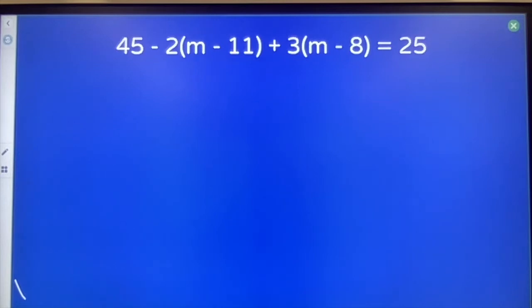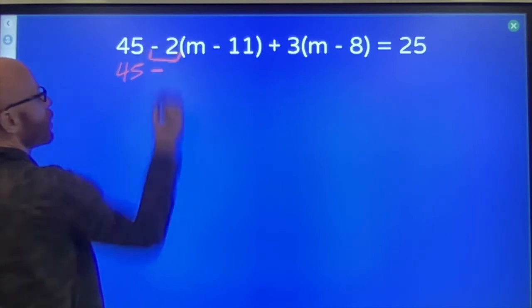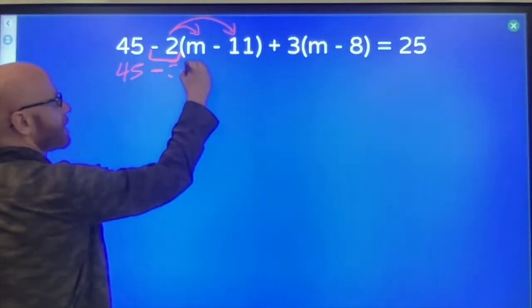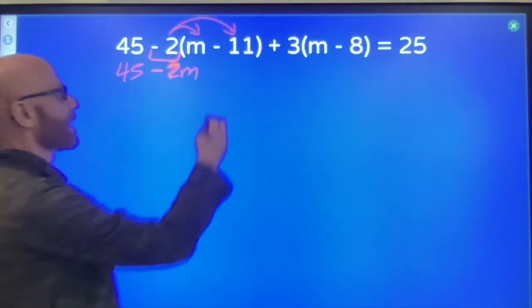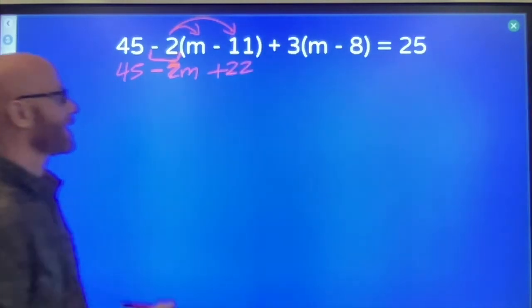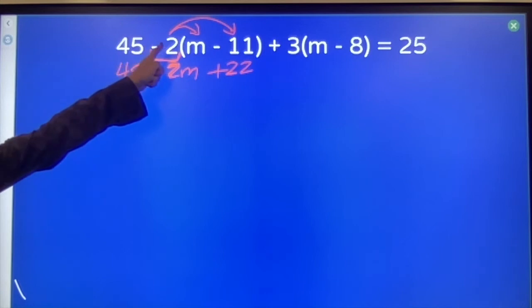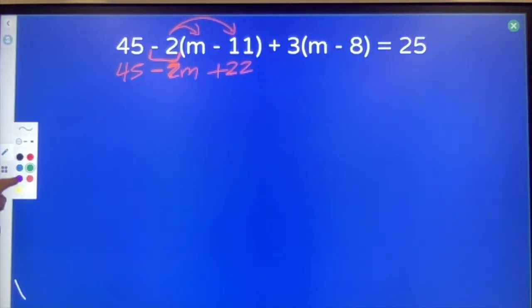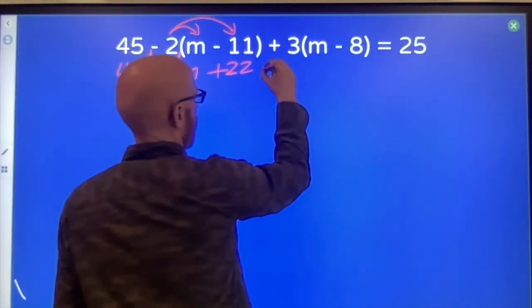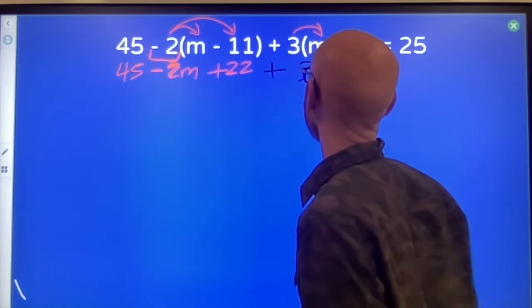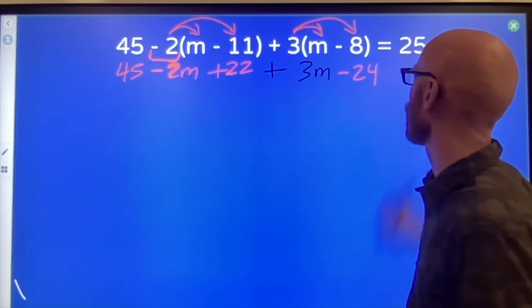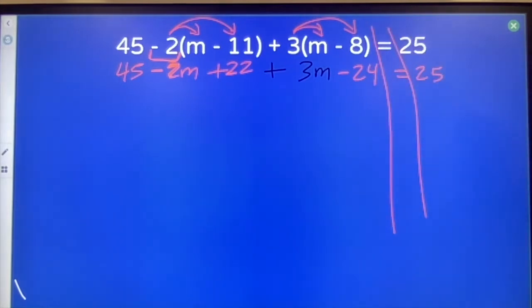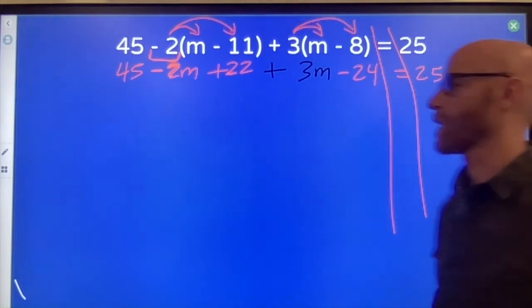Distributing to get rid of parentheses, 45 minus, this minus 2 is the thing that's distributing, the minus stays with the 2, so we've got negative 2 times m, and we also have negative 2 times minus 11, which is going to give us a plus 22. This is something you're going to have to be careful of. Minus signs stay with the numbers that follow them even as we distribute through parentheses.